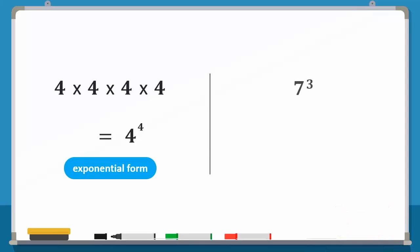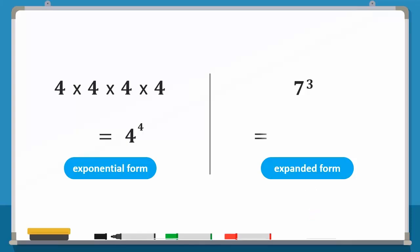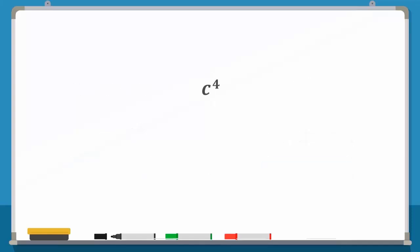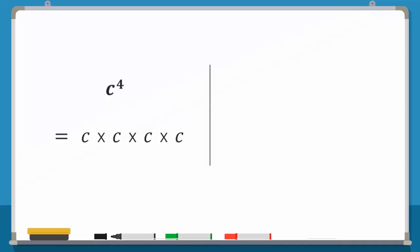How do we write 7 to the power 3 in the expanded form? This is simply equal to 7 times 7 times 7. Similarly, in algebra, c to the power 4 means multiplying c 4 times. And g multiplied by itself 5 times means g to the power 5.